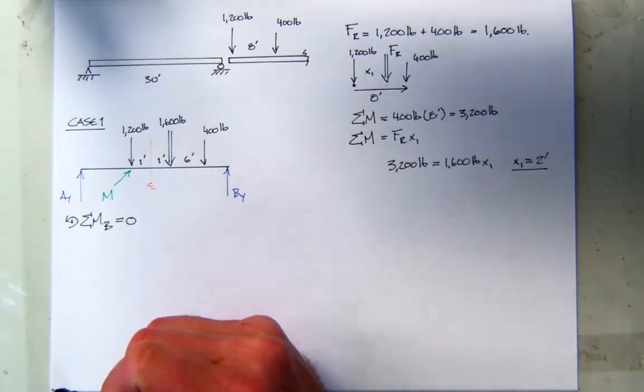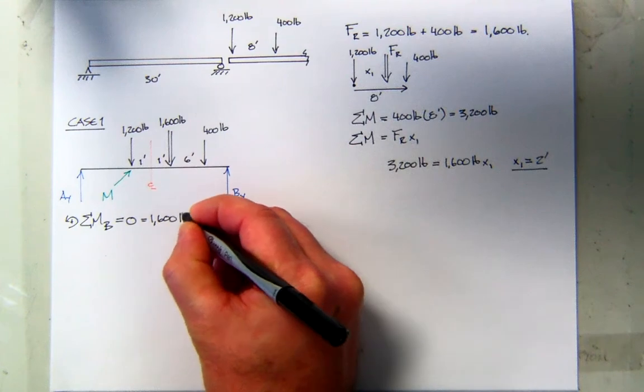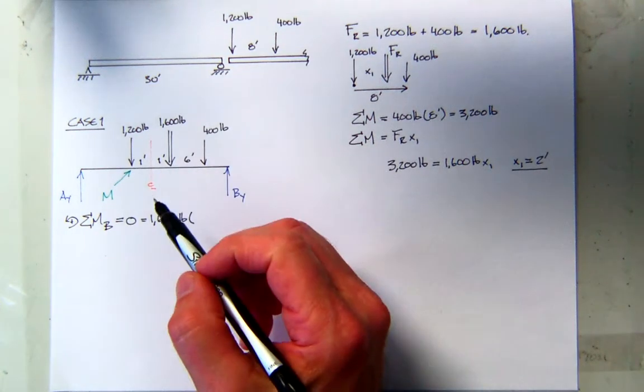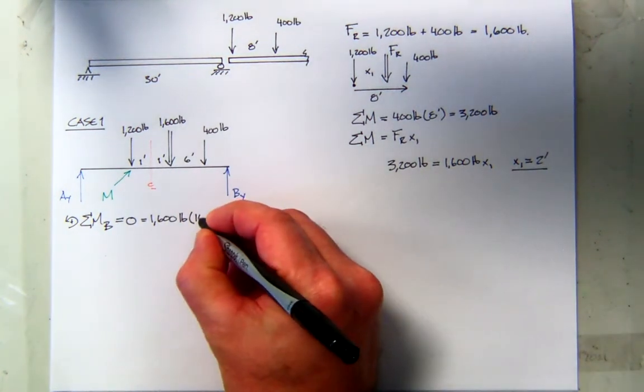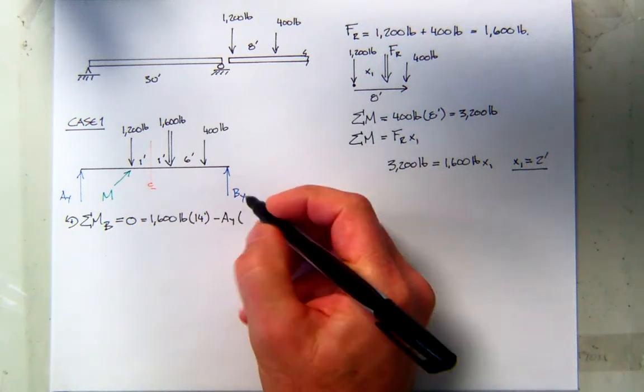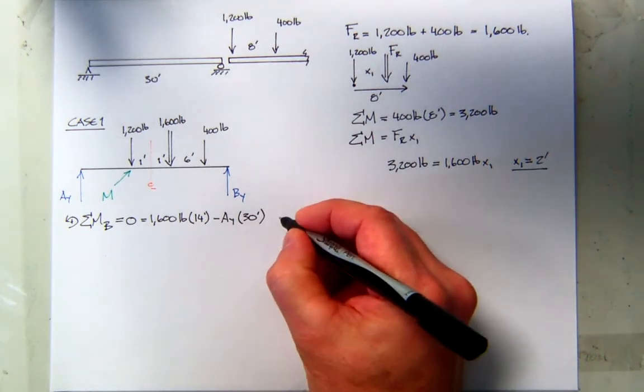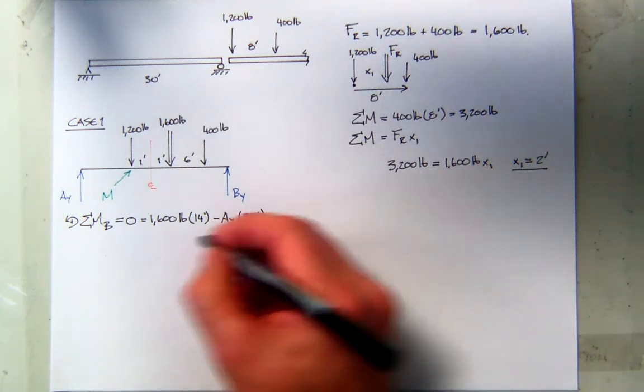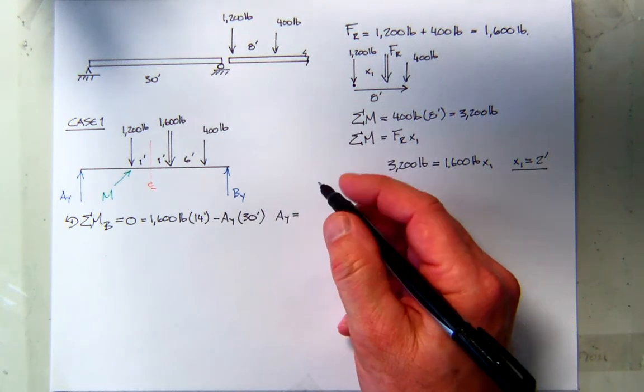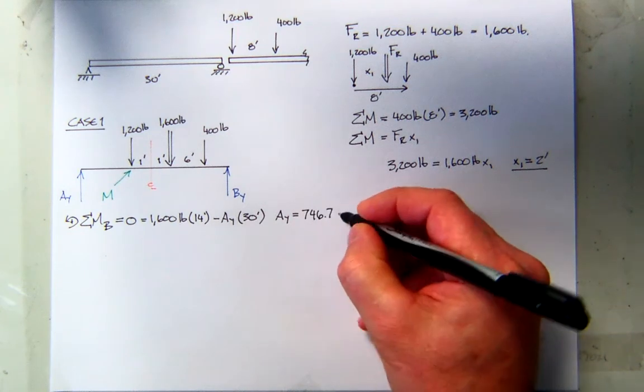So just looking at the resultant force, what moment does it create about B? Positive. So it has a force of 1,600 pounds. What's the distance to it? Well, it's one foot from the center line. What's the center line of the structure to B? 15. So it would be 14 feet. And then my reaction at A is going to create negative moment, and it has a moment arm of the total length of the beam, which is 30 feet. So what's A-Y equal to? Positive 746.7, 746.7 pounds.